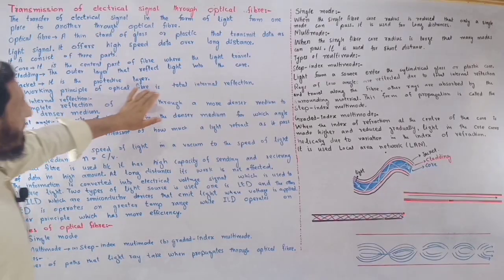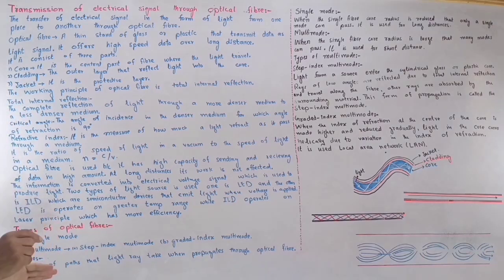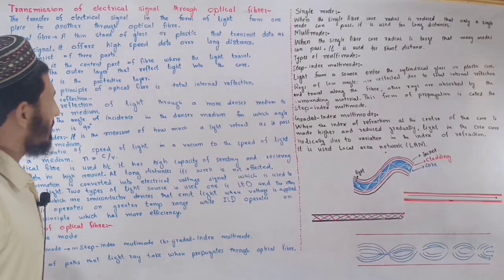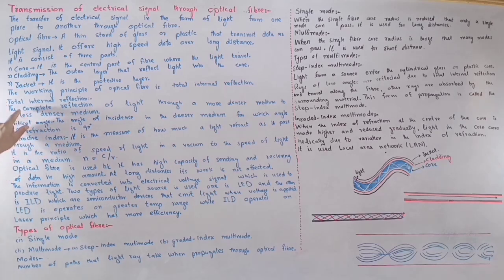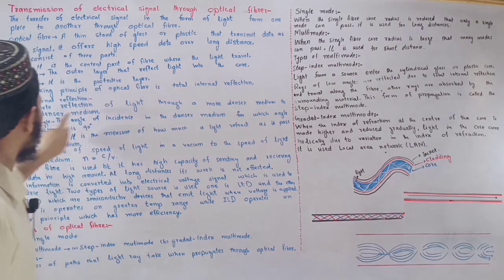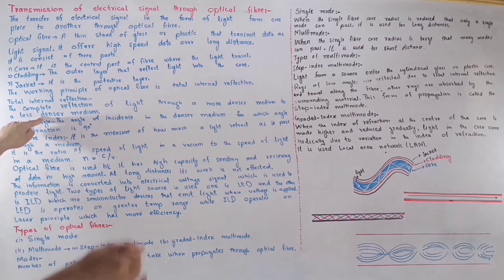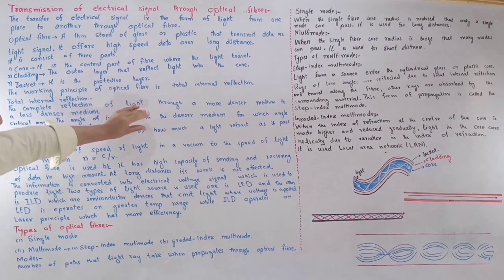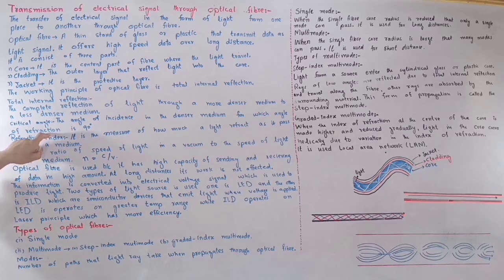The working principle of optical fiber is total internal reflection. This is discussed in detail in geometric optics. Total internal reflection is the complete reflection of light from a denser medium to a less dense medium. The critical angle is the angle of incidence in the denser medium for which the angle of refraction is 90 degrees.